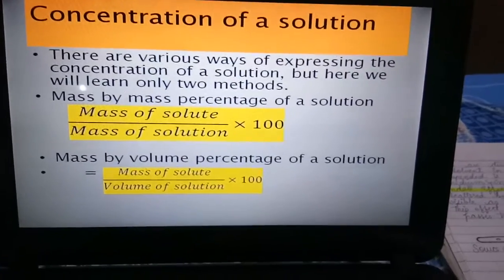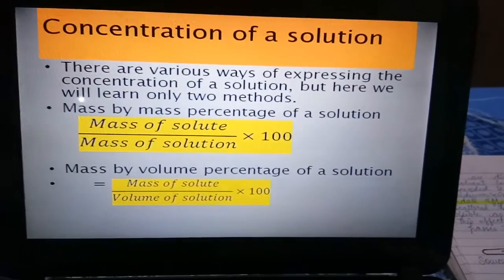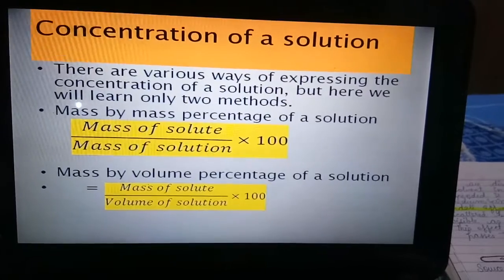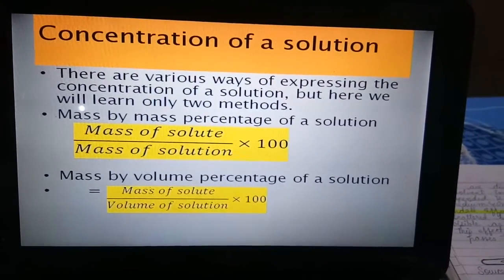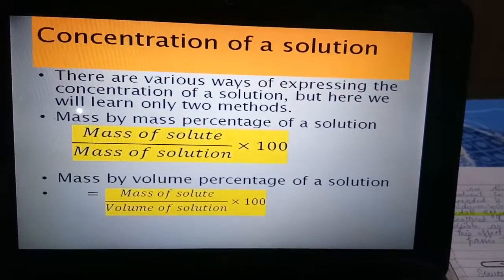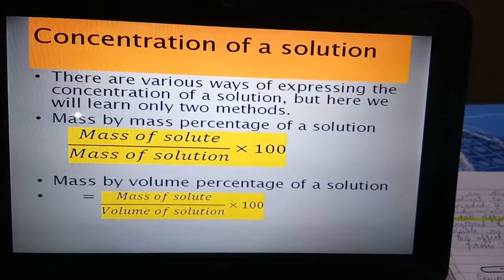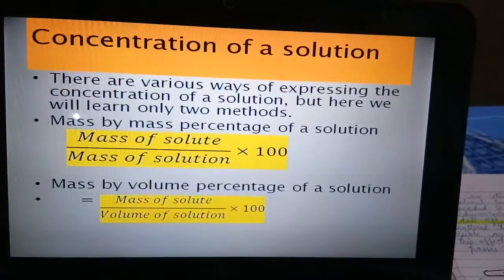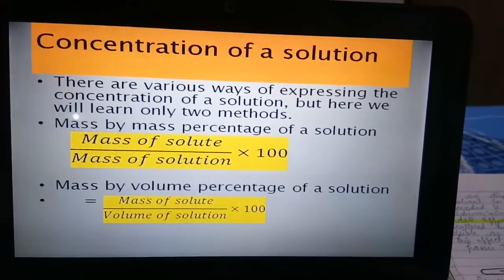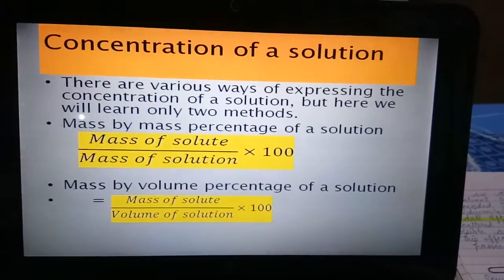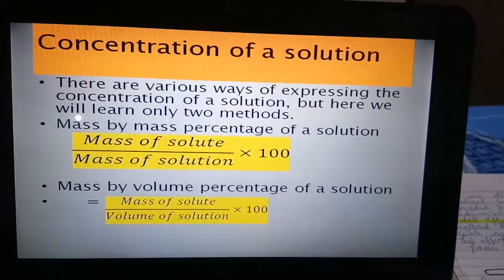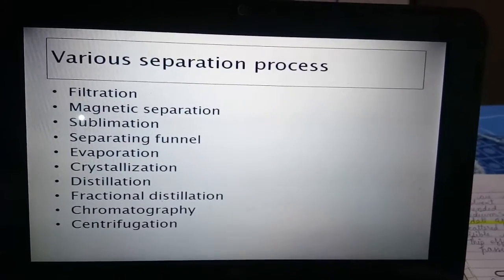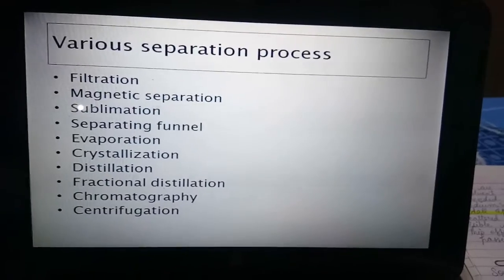When dealing with solutions, there is a numerical part on how to express the concentration of a solution. We will learn two methods: mass by mass percentage and mass by volume percentage. For mass by mass percentage, divide the mass of solute by the mass of the solution and multiply by 100. Similarly, volume percentage is calculated based on the given data in numerical problems.